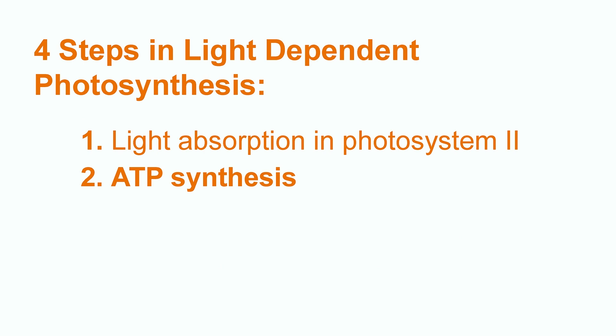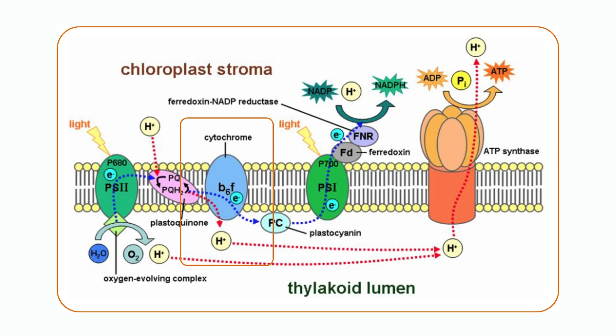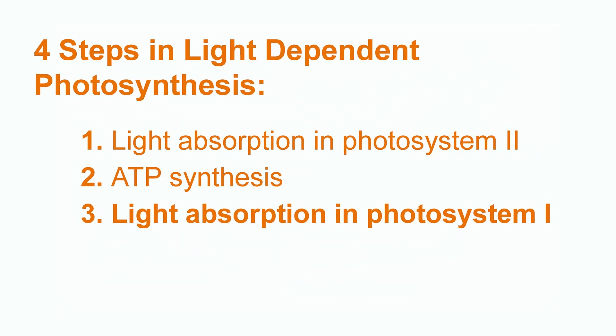The second step is ATP synthesis. ATP is generated by an electron transport chain via the high-energy electron. The third step is light absorption in photosystem 1.